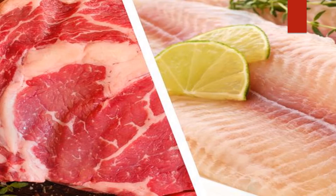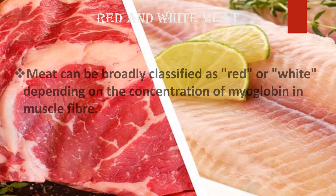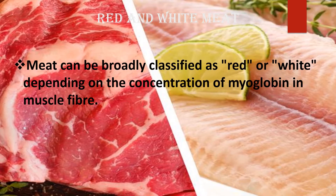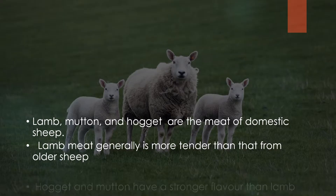Myoglobin is an important pigment in blood which gives red colour. The redness of meat depends on the species, animal age and the fibre type. Red meat contains more narrow muscle fibres while white meat contains more broader muscle fibres. White meat has lesser myoglobin and red meat has more myoglobin concentration. Hence meat is categorized as red meat, while poultry and fish are categorized as white meat.